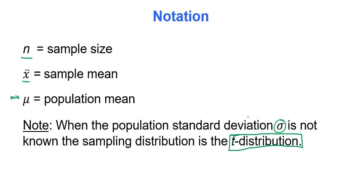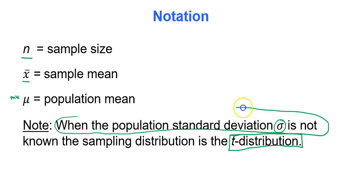Remember, the t-distribution is kind of like the standard normal distribution. The two are practically identical the larger your sample sizes, but the t-distribution is a little bit more accurate for doing these sorts of hypothesis tests. So you use the t-distribution when the population standard deviation sigma is not known.